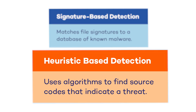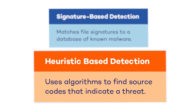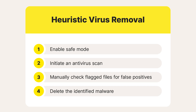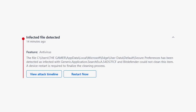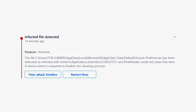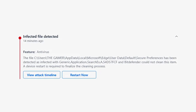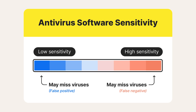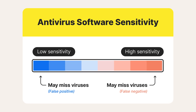Next, we have heuristic-based detection, which is a more dynamic approach that focuses on identifying ransomware based on its behavior rather than predefined signatures. This method uses a set of rules or heuristics to detect suspicious activities, such as rapid file encryption or unusual network behavior. By analyzing the behavior of programs in real-time, heuristic-based detection can uncover previously unknown ransomware strains. However, it may also generate false positives, as legitimate software can sometimes exhibit behaviors that trigger these heuristics. Striking a balance between sensitivity and specificity is really important for ensuring accurate detection without causing unnecessary alarm.